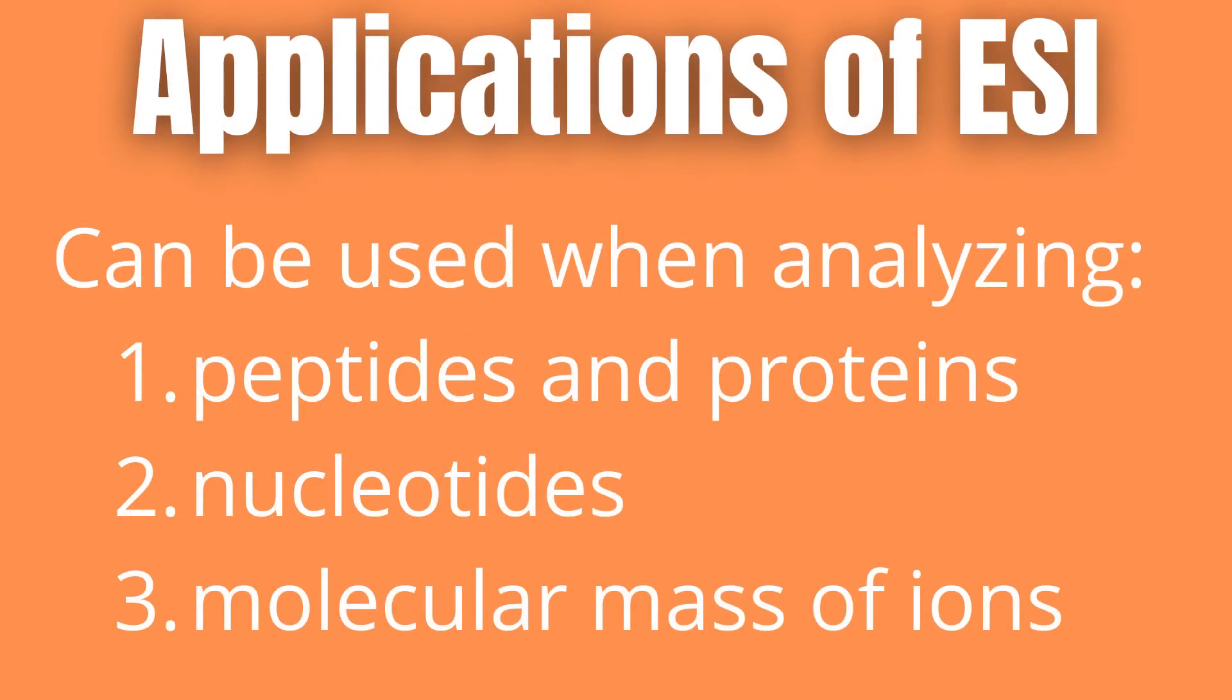Electrospray ionization is indeed useful due to how it solves the problem of high polarity ionization of terminally unstable proteins and the determination of the molecular mass of macromolecular organisms.